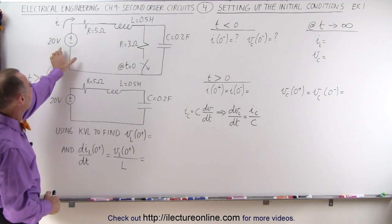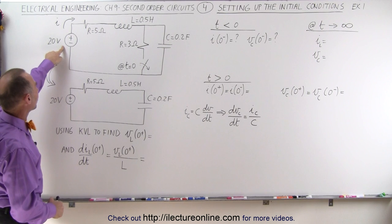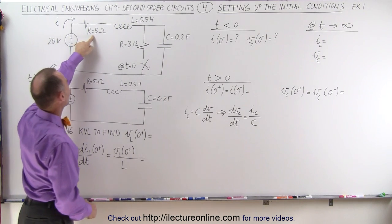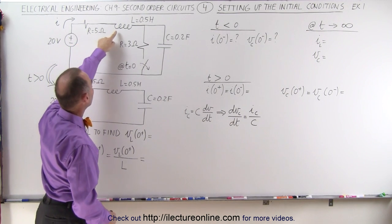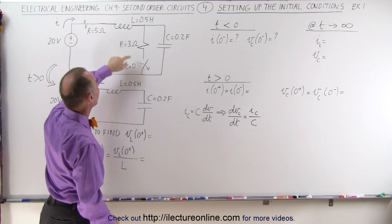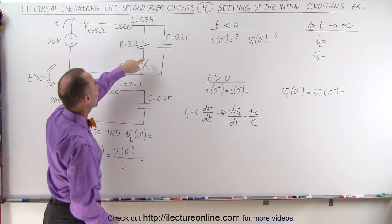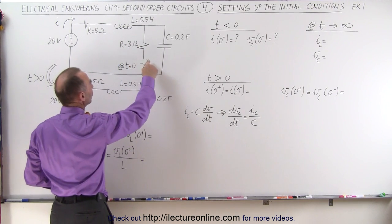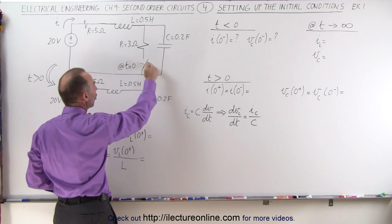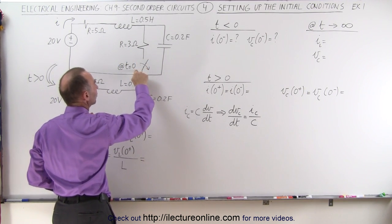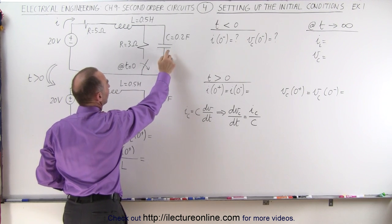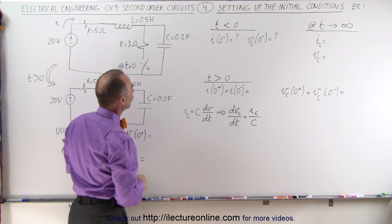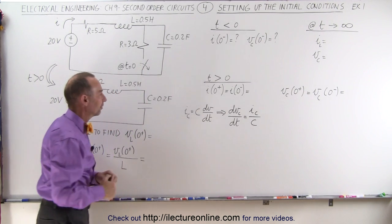Here we have a circuit with a 20 volt source, a resistor of 5 ohms, an inductor of 0.5 Henrys, then we have a branch — one branch with a resistor and a switch that will open at time equals zero, and a capacitor on the second branch of 0.2 Farads.